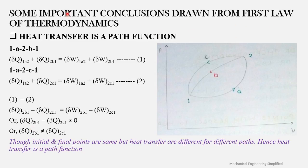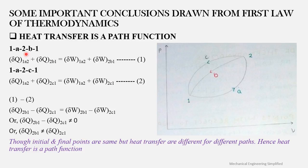Now let us look at some important conclusions drawn from the first law of thermodynamics. The first conclusion is that heat transfer is a path function. Consider a PV diagram with two state points — point one and point two — and three paths. We go from one to two by path A, and return from two to one by path B or path C.